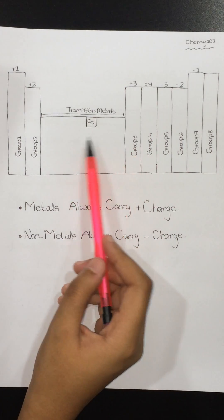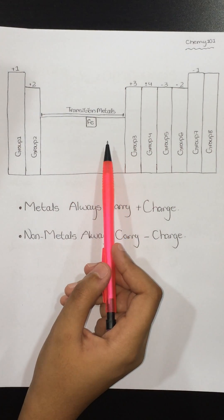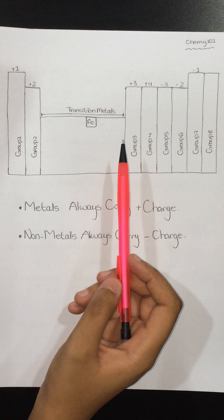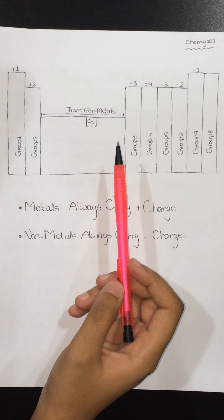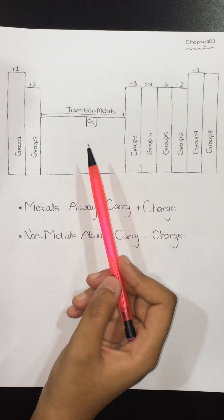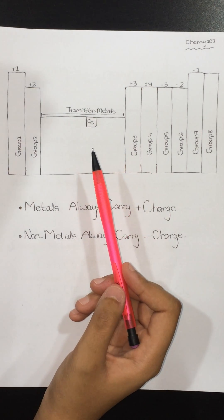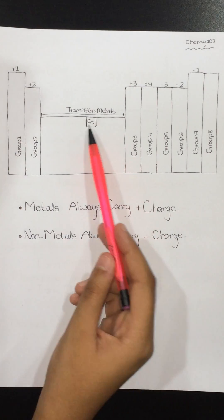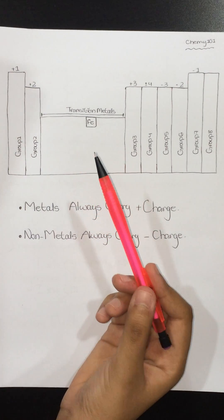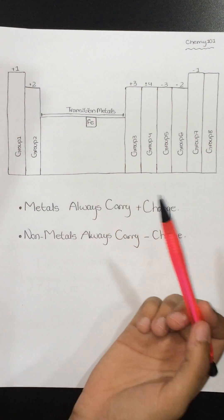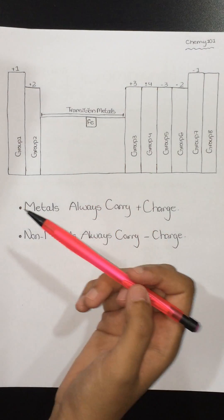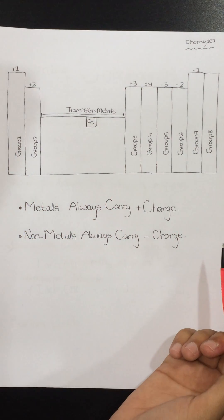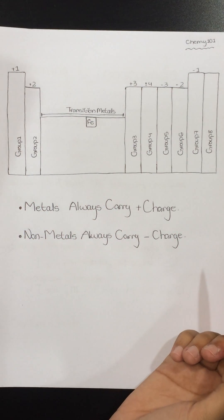Transition metals don't have a fixed charge pattern, so you should memorize them or they will be given to you in compound names. For example, iron can have a charge of positive 2 or positive 3.